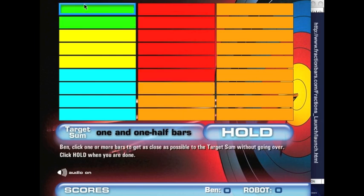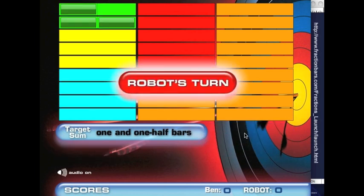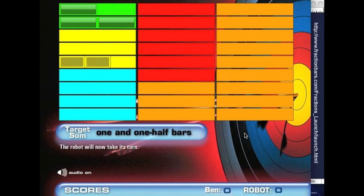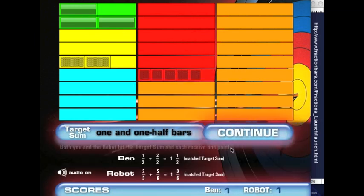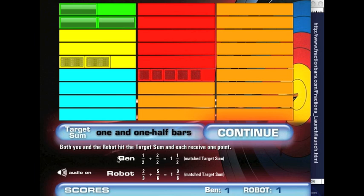He turns over two or more bars to get as close as possible to a sum of one and a half without going over. And then clicks Hold. Then the robot turns over bars. The sums of Ben's fractions and the robot's fractions are printed and the player with the greater sum wins the round.